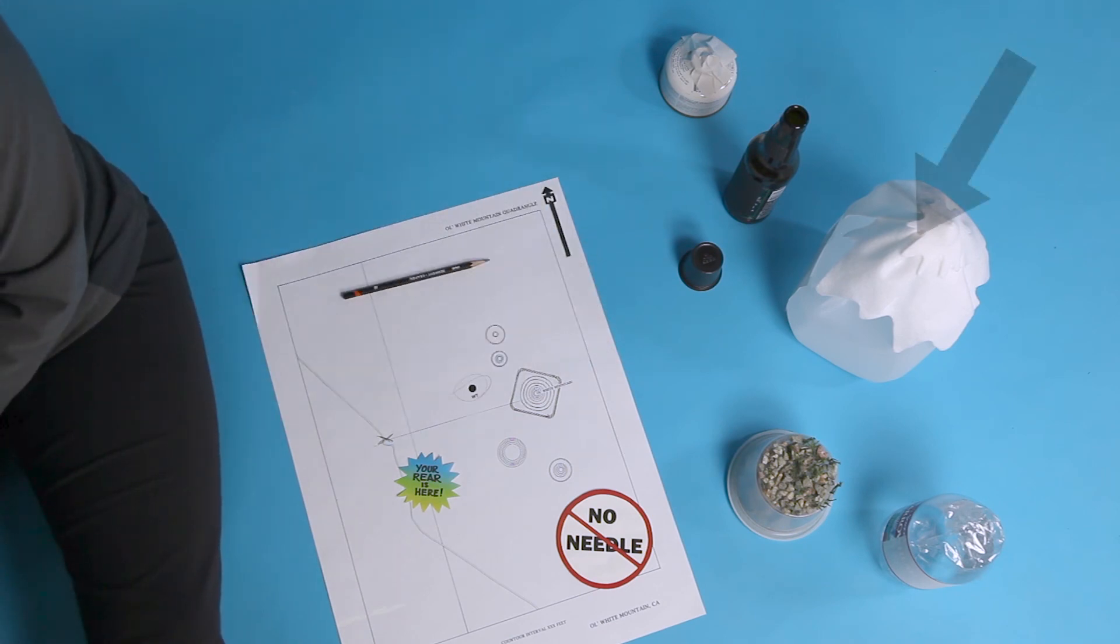So if you want to identify a feature you see in the field, start by taking a field bearing on that feature. If you want to identify a feature you see on the map, start by taking a map bearing on that feature.